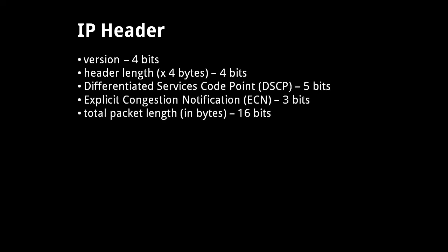The next two fields — differentiated services code point and the explicit congestion notification — we'll ignore these because they're actually optional. Some hosts and routers use these fields to help regulate the pace at which packets get sent, but many hosts and routers simply ignore these fields. The total packet length field, however, is not optional, and specifies the size in bytes of the whole IP packet, including the header.